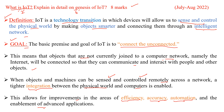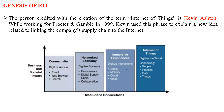The remaining six marks will be for the genesis of IoT, which is nothing but the origin of IoT. The person credited with the creation of the term Internet of Things is Kevin Ashton. While working for Procter & Gamble in 1999, Kevin used this phrase to explain a new idea related to linking the company's supply chain to the internet.